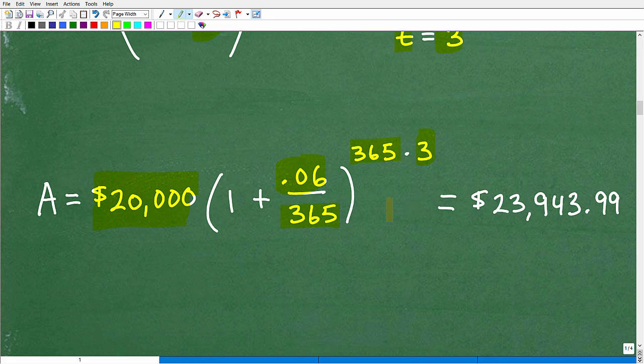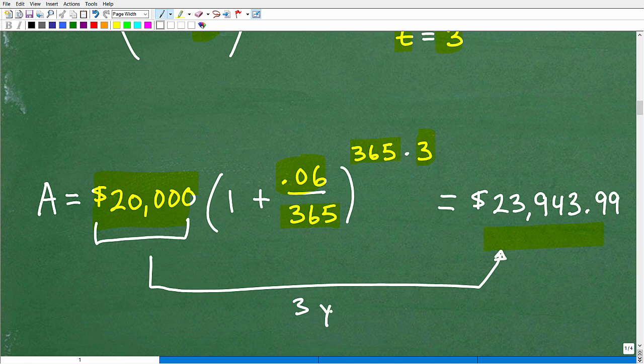When we do this, you will end up with $23,943.99. So our $20,000 over three years grew to $23,943.99.